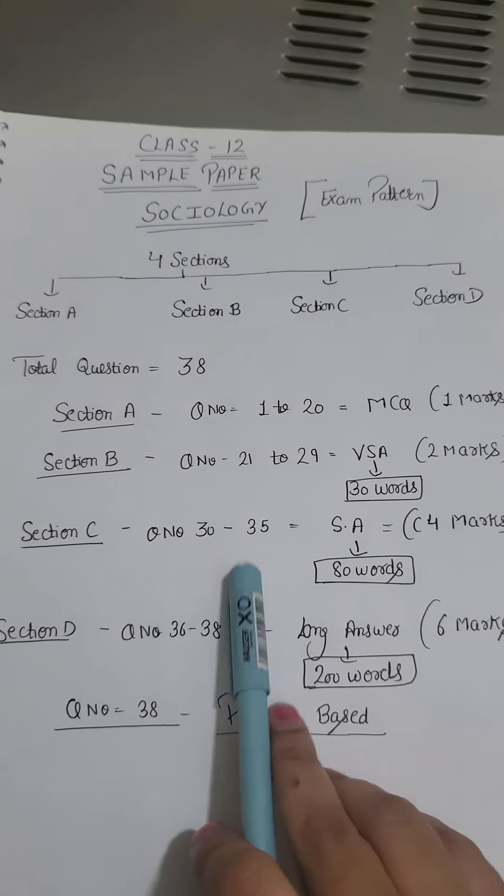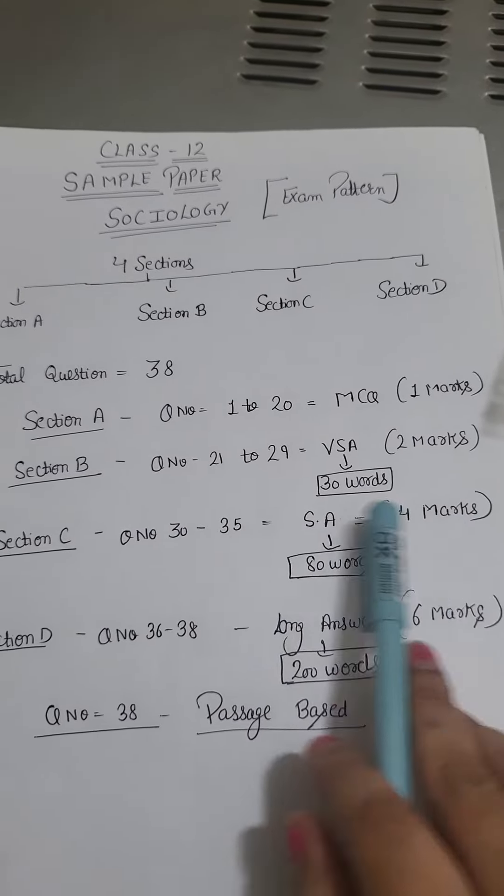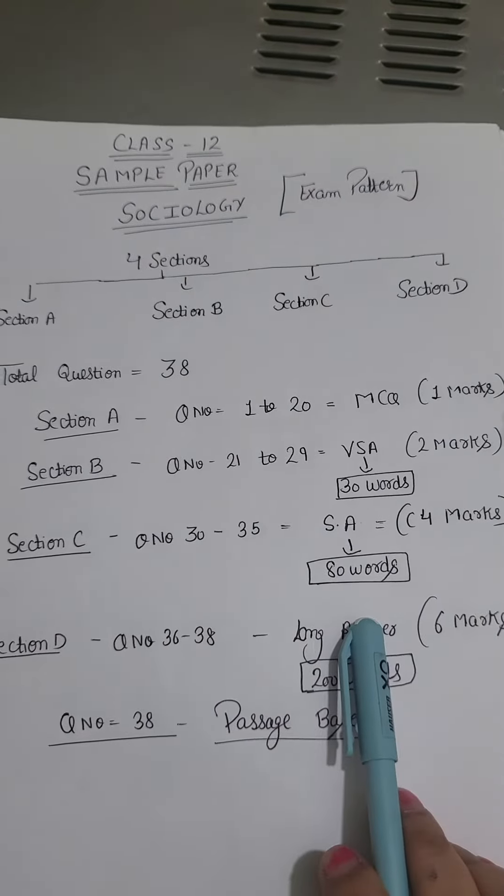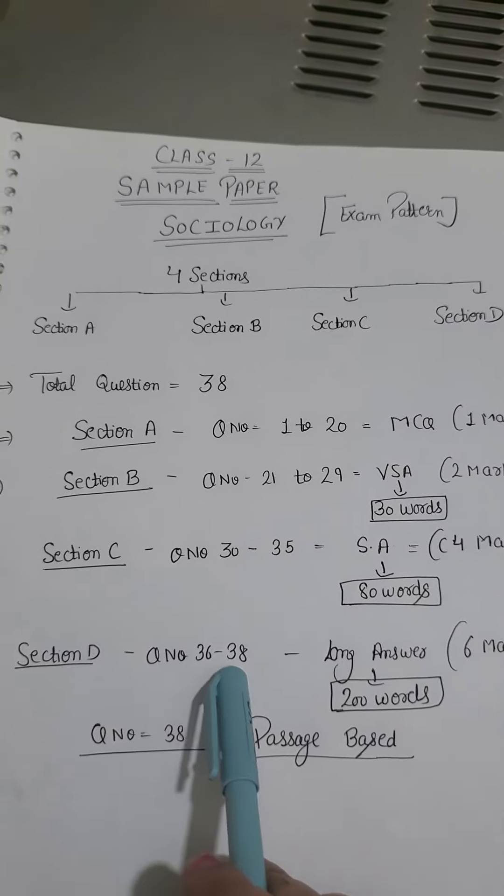Section C, question number 30 to 35, short answer will be 4 marks in 80 words. Section D, questions 36, 37 and 38.